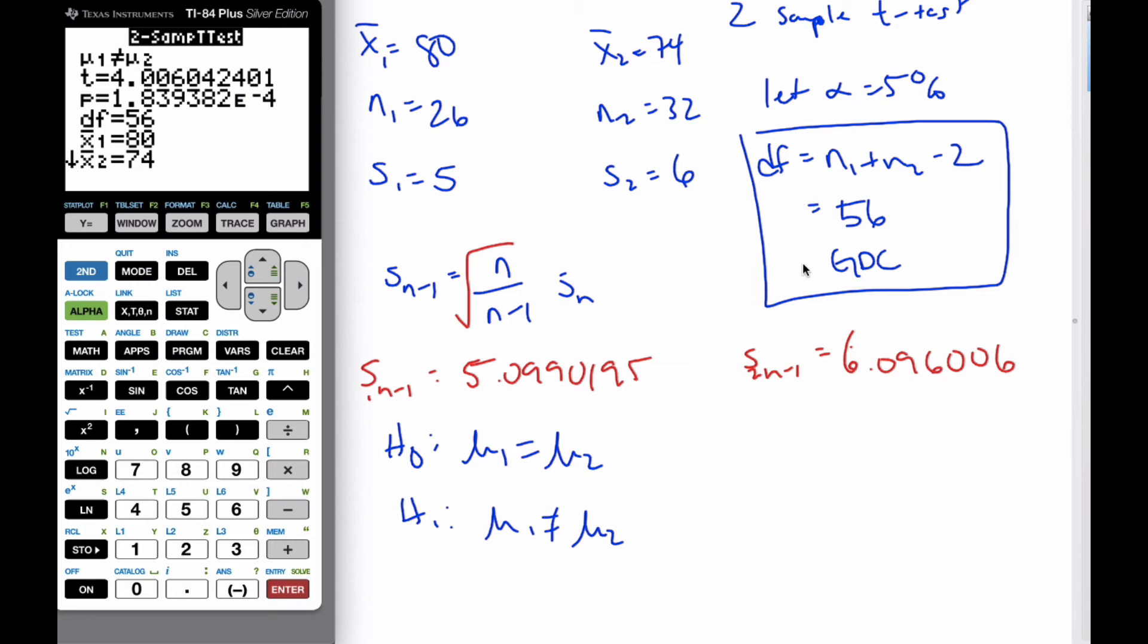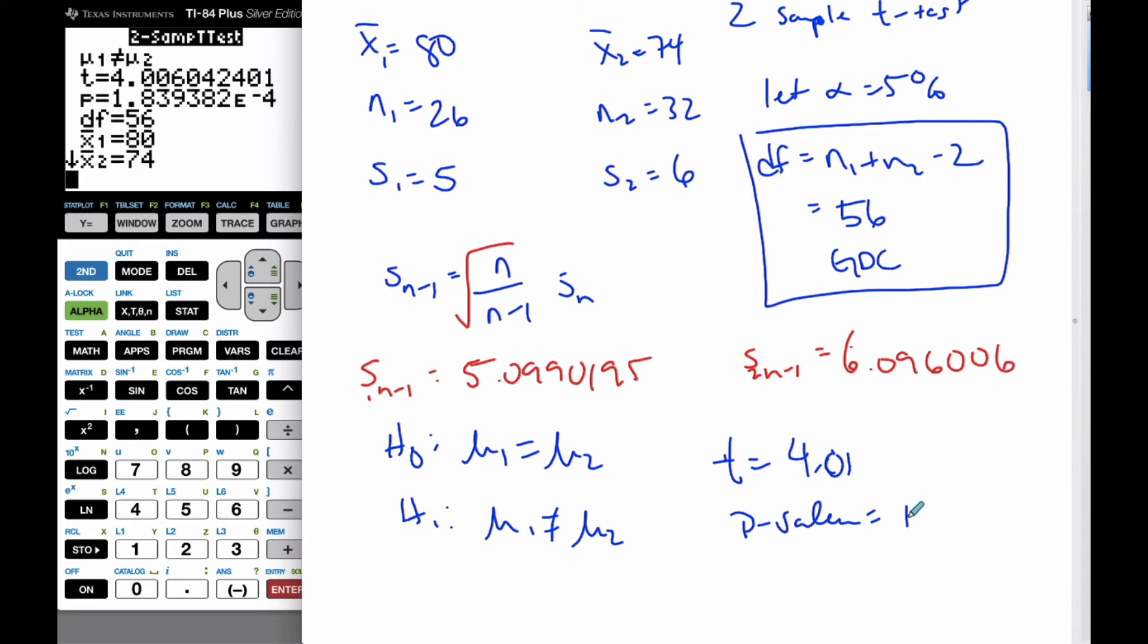So I can see that my degrees of freedom is 56. My t-value is equal to 4.006006, which I'll round to three significant figures, 4.01. And my p-value is equal to 0.0001. It's really small, basically zero.